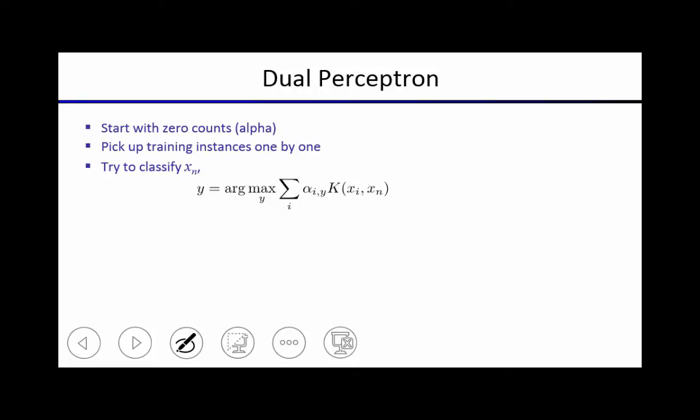So what does training of the dual perceptron look like? Dual referring to the fact that we're now keeping track of the alpha vectors rather than the w vectors. We still go through the training examples one by one, and we might have to cycle through the entire training data set multiple times until we're converged. When we try to classify example x_n, for each class, we compute this over here, which is the score. We see which class maximizes this score. If that corresponds to the label, nothing changes because our weight vectors, now our alpha vectors, are good enough to classify this example.